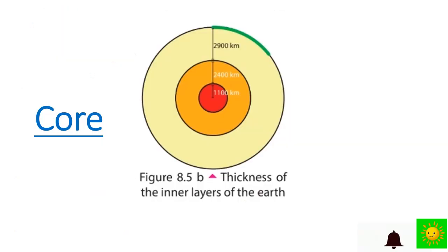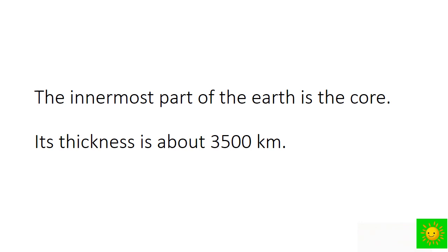Next, core. The innermost part of the earth is the core. Its thickness is about 3,500 kilometers. The upper part is made up of molten iron and nickel metals.